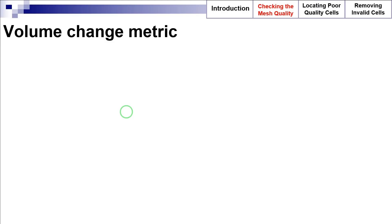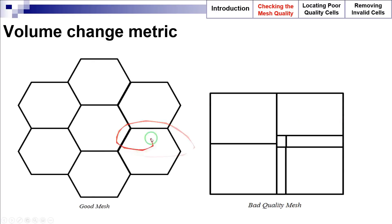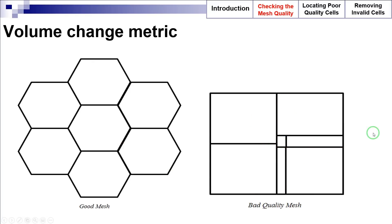The volume change metric evaluates the ratio of the volume of a cell to the largest volume of its neighboring cells. These figures show a good volume change and a bad volume change. Note that sharp variations of the cell volumes in the vicinity of a cell can cause serious inaccuracies and instabilities.